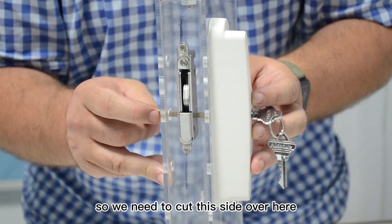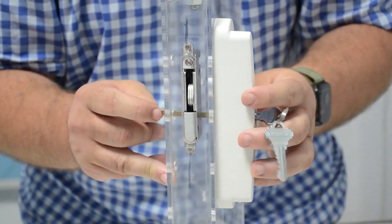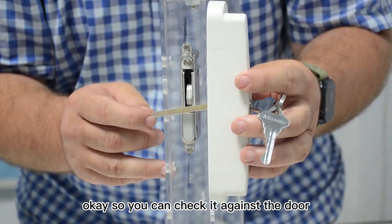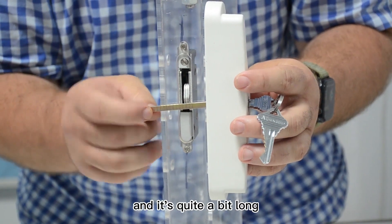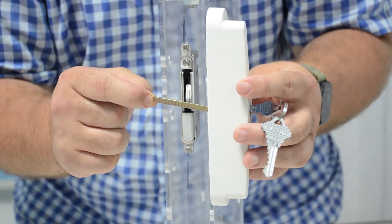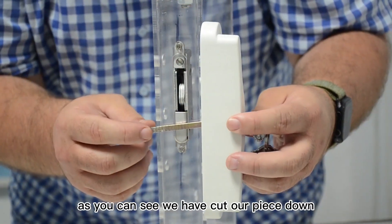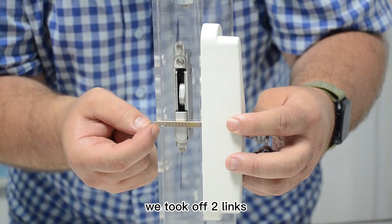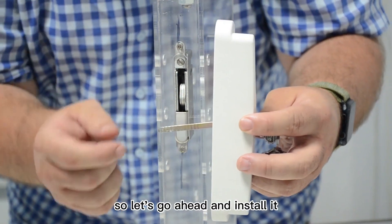So we need to cut this side over here. You can check it against the door and it's quite a bit long, so we're going to take that back about two to three notches. As you can see, we have cut our piece down and we took off two links. So let's go ahead and install it.